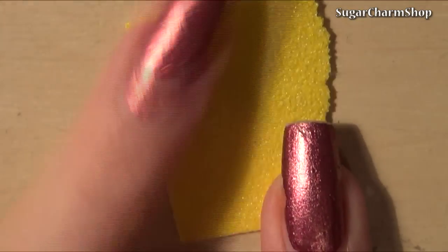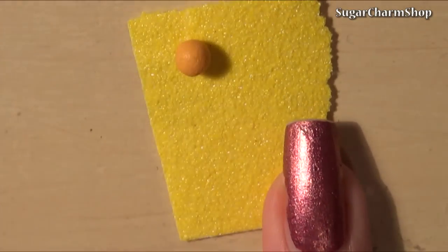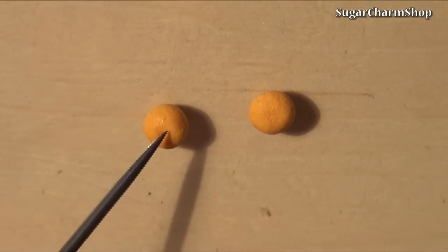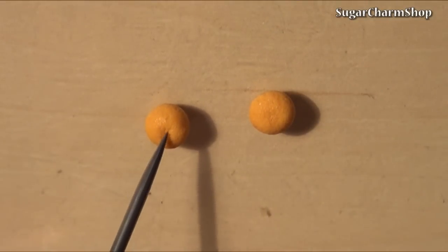And to make the whole clementines I just rolled out balls of the opaque orange, added texture using sandpaper, made a couple of lines using my needle tool and added tiny pieces of green clay.